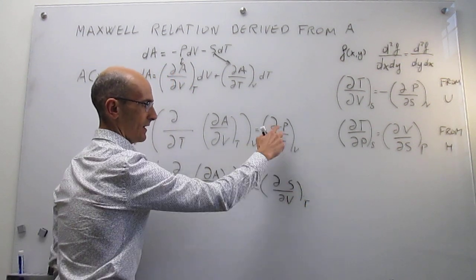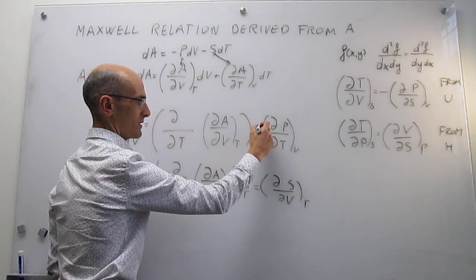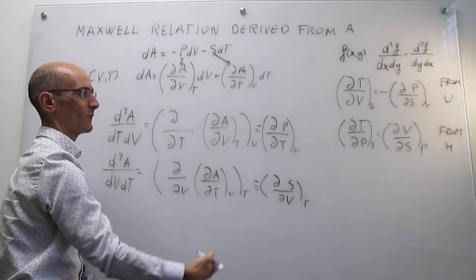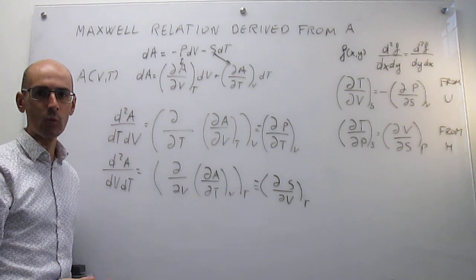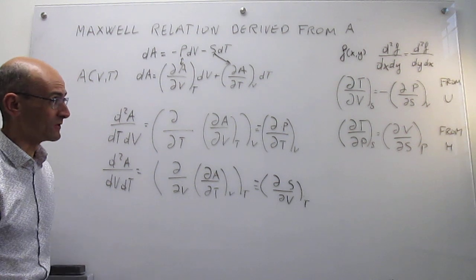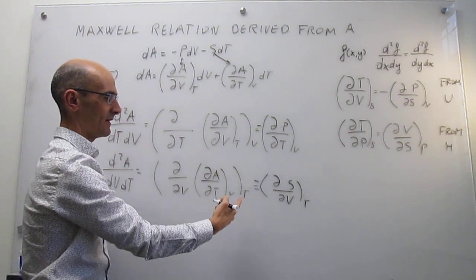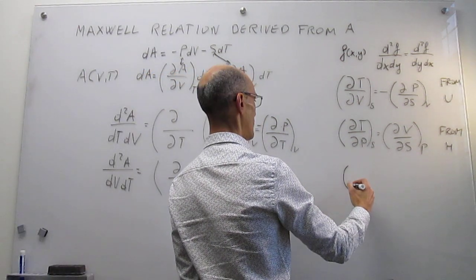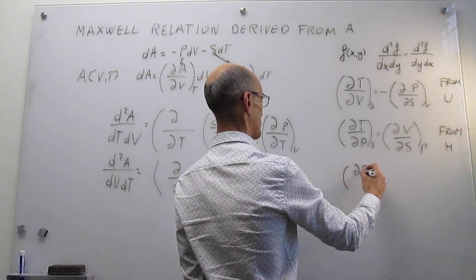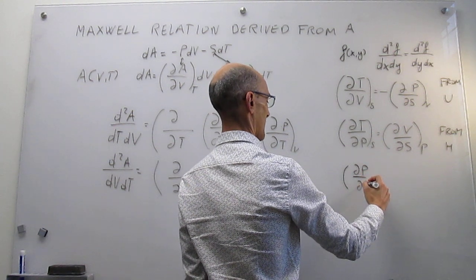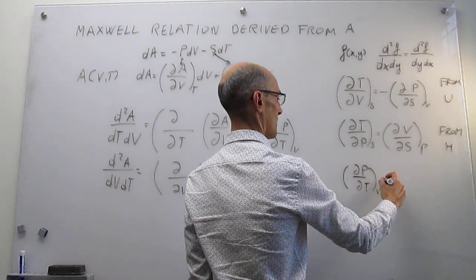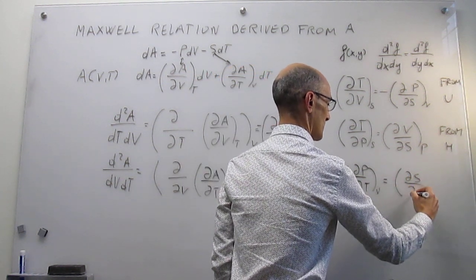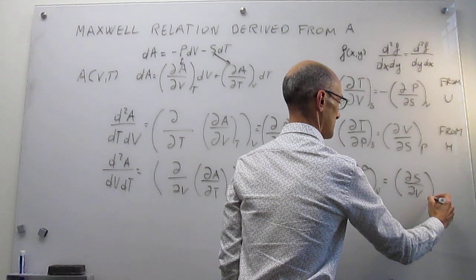The minus signs come out of both expressions. Since these two mixed second derivatives must be equal to each other by path independence, the negative signs cancel, and we arrive at our third Maxwell relation derived from the Helmholtz energy: the partial derivative of pressure with respect to temperature at constant volume equals the partial derivative of entropy with respect to volume at constant temperature.